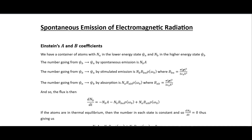In this video I'm going to be looking at spontaneous emission of electromagnetic radiation using the technique called Einstein's A and B coefficients. If we think of a container of atoms with N_a in the lower energy state ψ_a and N_b in the higher energy state ψ_b, then the number going from ψ_b to ψ_a by spontaneous emission is N_b times A.